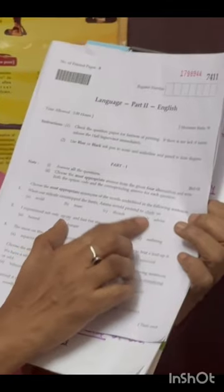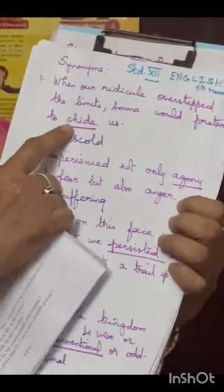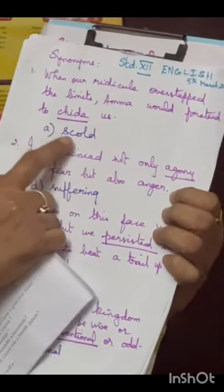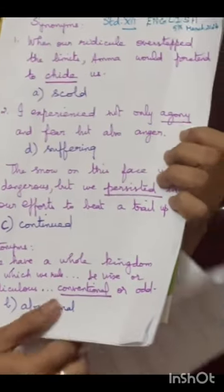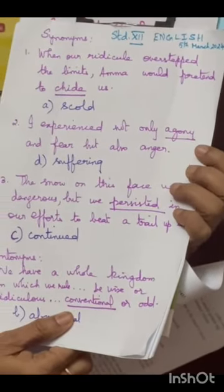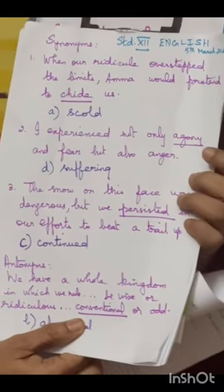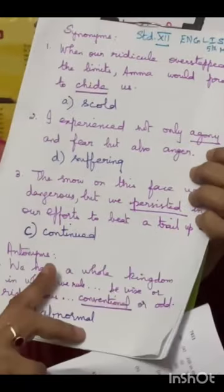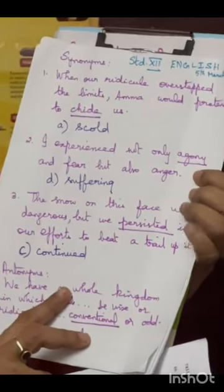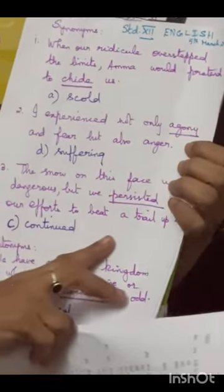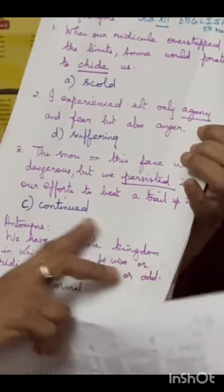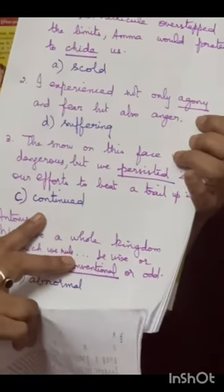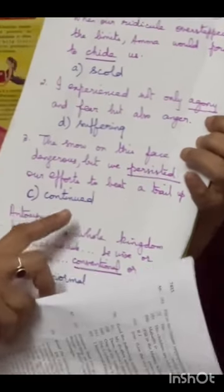First question: 'When our ridicule oversteps the limits, Amma would pretend to chide us.' The underlined word is 'chide' and the answer is 'scold.' Next, 'I experienced not only agony and fear, but also anger.' Agony is underlined and the answer is option D, 'suffering.' Third one: 'The snow on this face was dangerous, but we persisted in our efforts to beat a trail up it.' The correct answer C is 'continued' — a synonym for persisted.